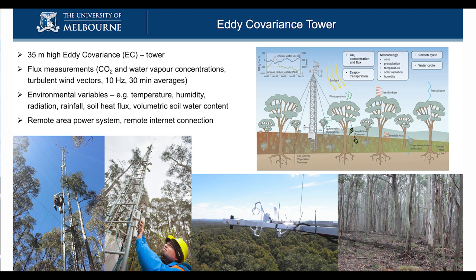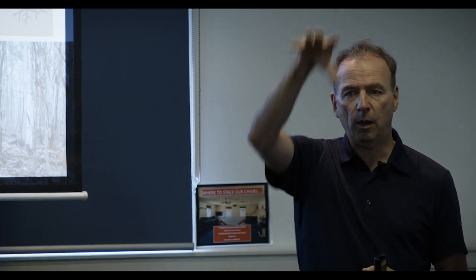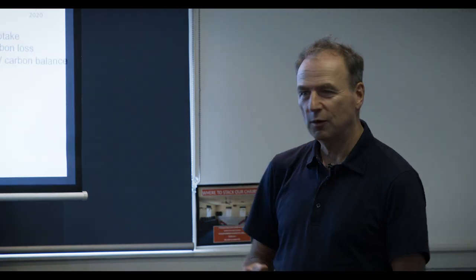This 35-meter eddy covariance tower has instruments that measure the exchange of carbon dioxide in and out of the forest and with the atmosphere. Sensors at the top measure CO2 concentration and wind direction. From these two pieces of information we can estimate how much carbon is going into the system, at what times, and how much carbon is coming out. The sensors also measure water exchange, so we can measure how much the whole forest is transpiring.